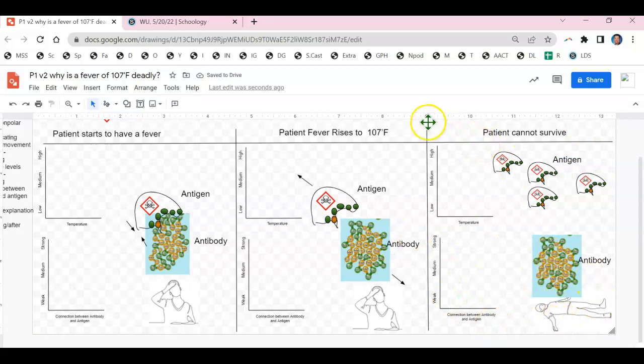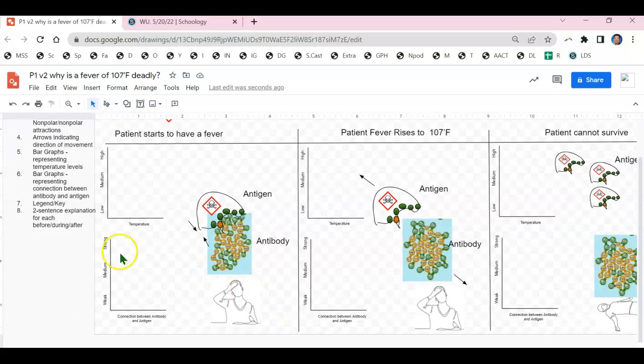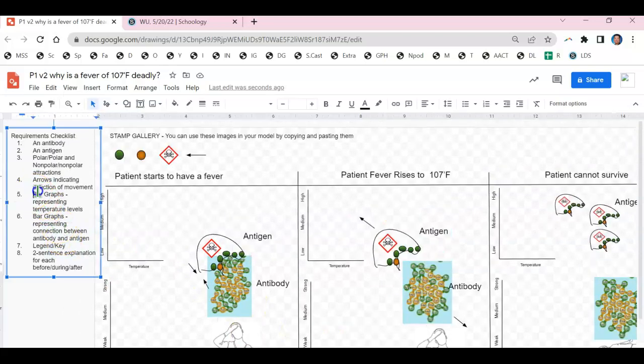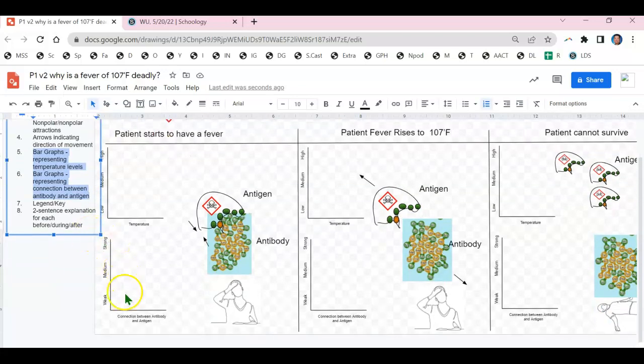And that is how you're going to draw your model for the antigen and antibody before, during, and after. The remainder of the assignment you need to do on your own, where you represent the temperature changes with bar graphs, the connection strength changes between antibody and antigen as bar graphs. Legend and keys, as long as you label your parts you should be fine. And go ahead and give a two sentence explanation for each model.